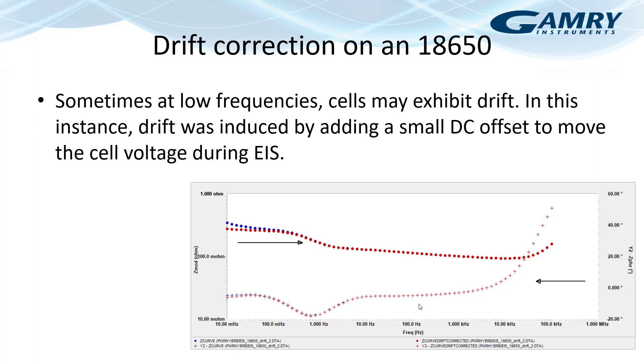What might this look like? Here we have an 18650 that we applied a small DC offset to move the cell voltage during this particular hybrid EIS measurement. And we can see at the higher frequencies, this small offset doesn't really change the cell voltage much because we don't see much in terms of the corrected and uncorrected data. So as we get to lower and lower frequencies, though, we can see that the cell actually was drifting because of this DC offset that we were applying, purposefully causing the drift. And so the red curve is actually the drift-corrected impedance plot. Again, that functionality is there. It's up to you to decide how you would like to use that.